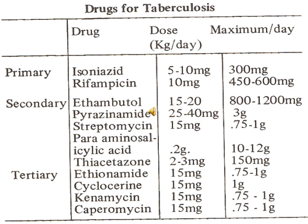Drugs commonly used for treatment of tuberculosis: primary or first-line drugs include isoniazid, given at 300 mg per day, and rifampicin at 450 to 600 mg per day. Second-line anti-tuberculosis drugs include streptomycin, pyrazinamide, ethambutol, fluoroquinolones, and ethionamide. Third-line drugs include cycloserine, para-aminosalicylic acid, kanamycin, and capreomycin.